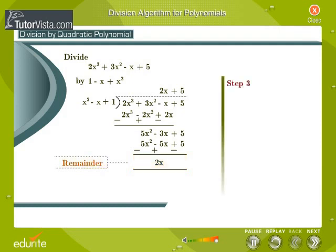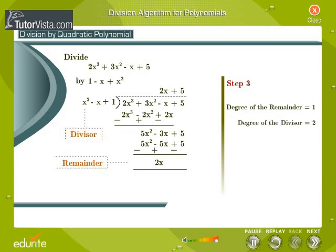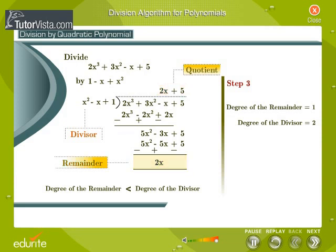Step 3: Check that the degree of the remainder is less than the degree of the divisor. The degree of the remainder is 1, and the degree of the divisor is 2. So we cannot continue the division any further. The quotient is 2x plus 5, and the remainder is 2x.